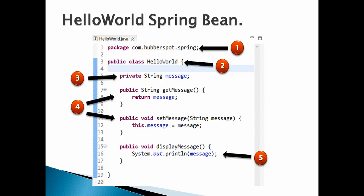Let's create the HelloWorld Spring bean and discuss the code point by point. Number 1: create a package into which the HelloWorld bean is placed — in our case it's com.hubberspot.spring. Number 2: create a public class named HelloWorld — this class will be our Spring bean class. Number 3: create a String instance variable in the HelloWorld bean; the variable name is 'message', which will hold the message we want to display on the console.